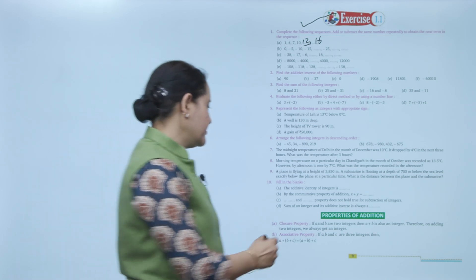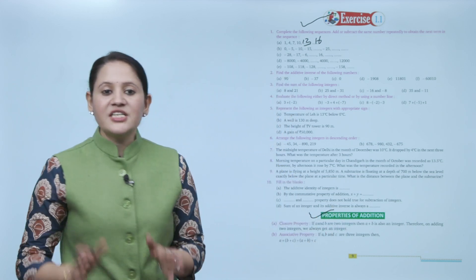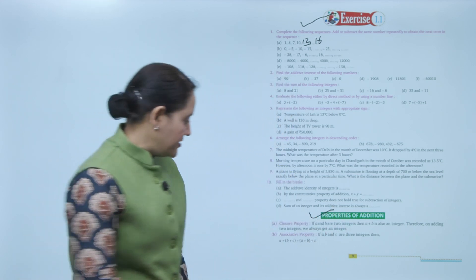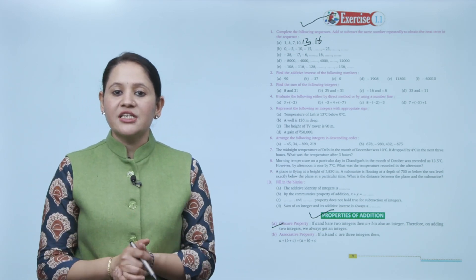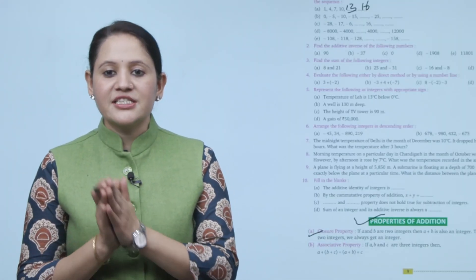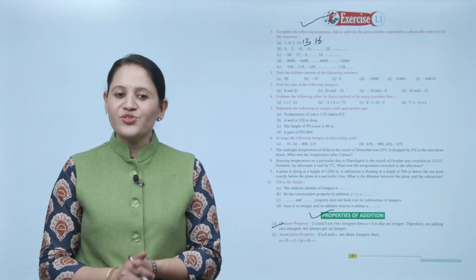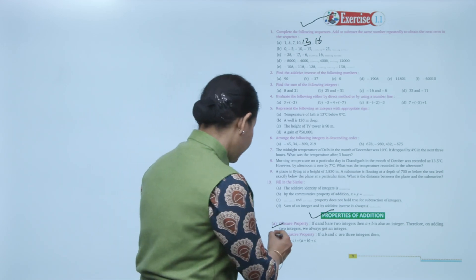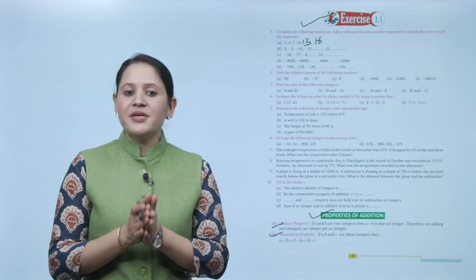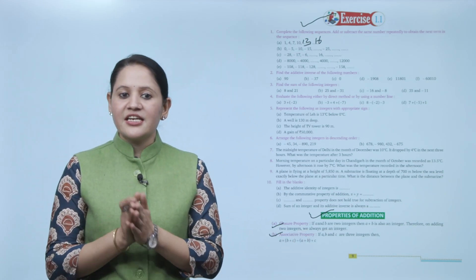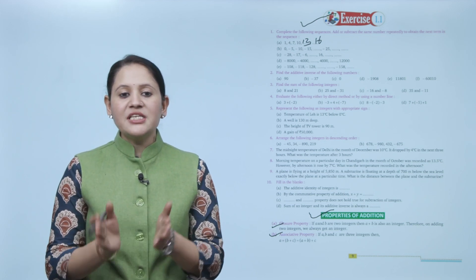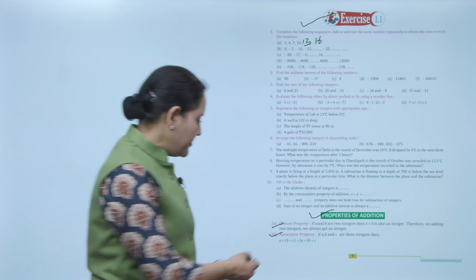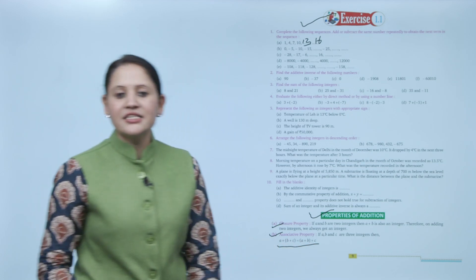Next is properties of addition. The first property is the closure property: if a and b are two integers, then a plus b is also an integer. Therefore, on adding two integers we will always get an integer. Next is the associative property: a plus (b plus c) equals (a plus b) plus c, meaning we can group them in any order and the result will remain the same.